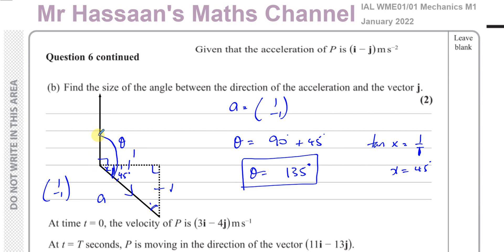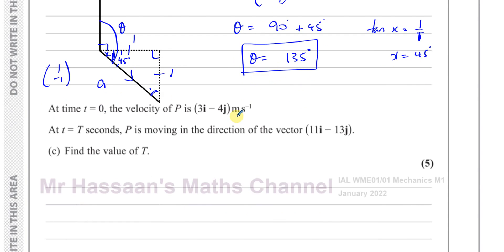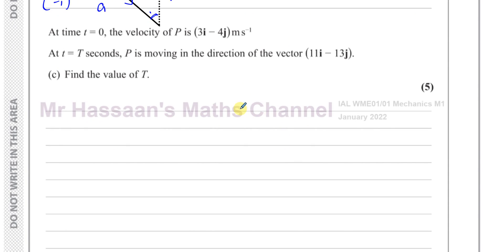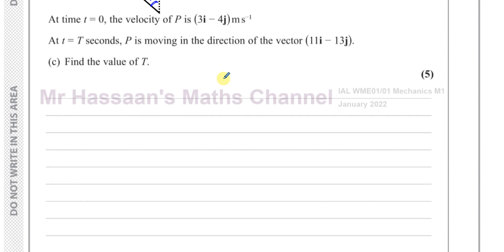That's part b. Now for part c: at time t = 0, the velocity of P is 3i − 4j. At time t seconds, P is moving in the direction of vector 11i − 13j. Find the value of t.